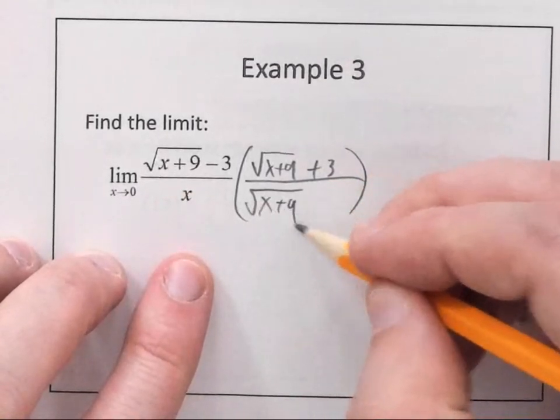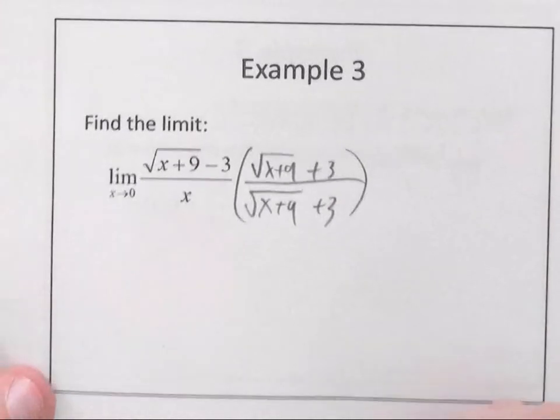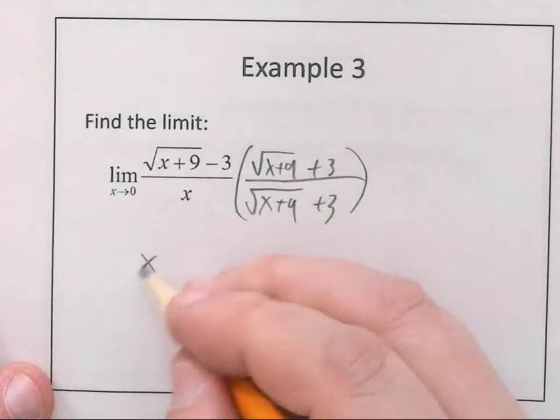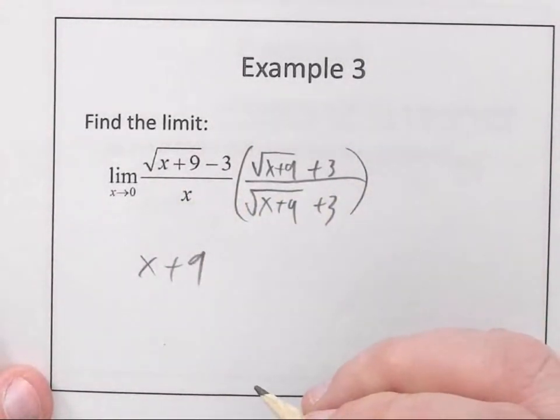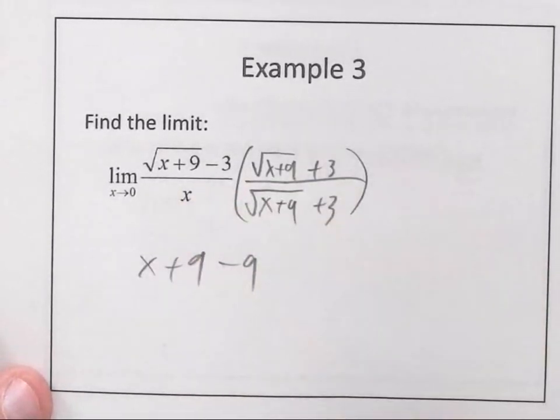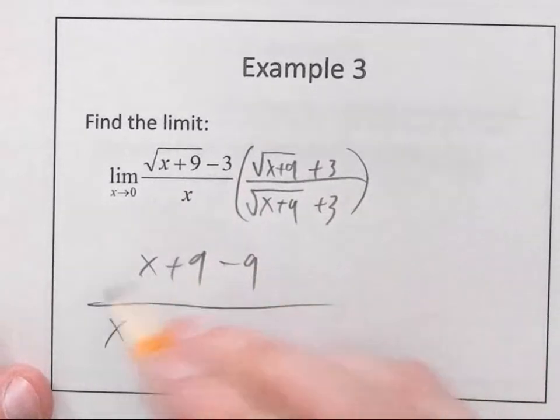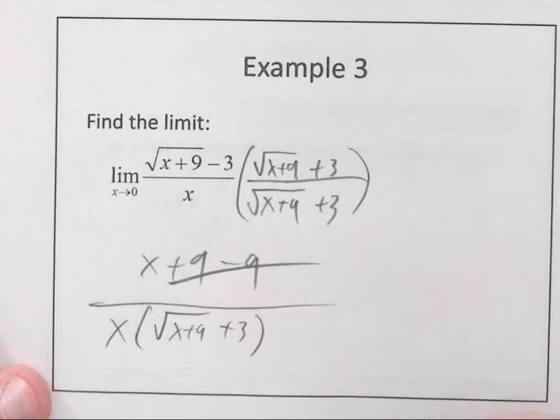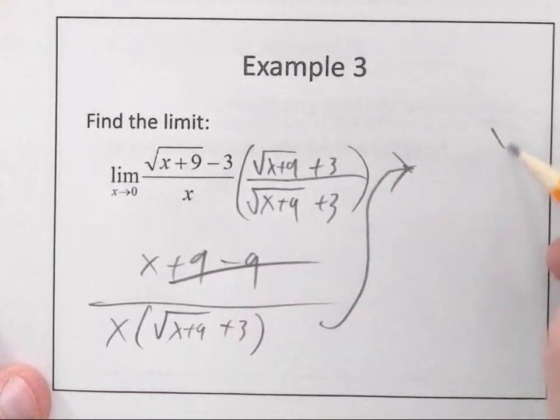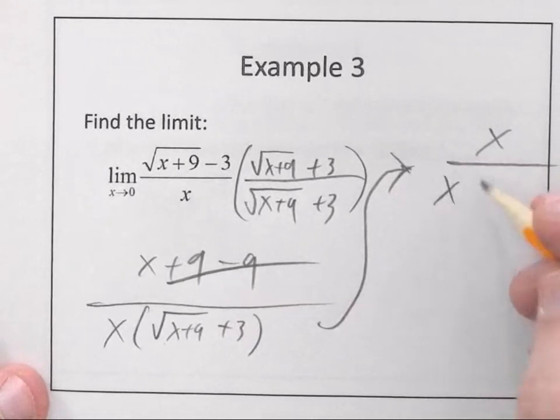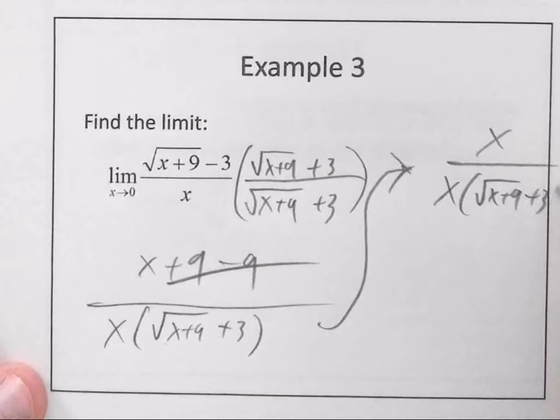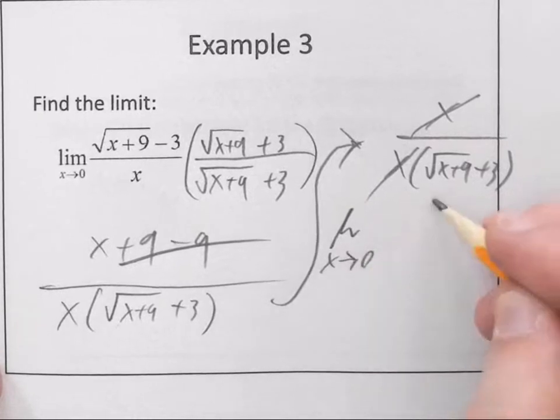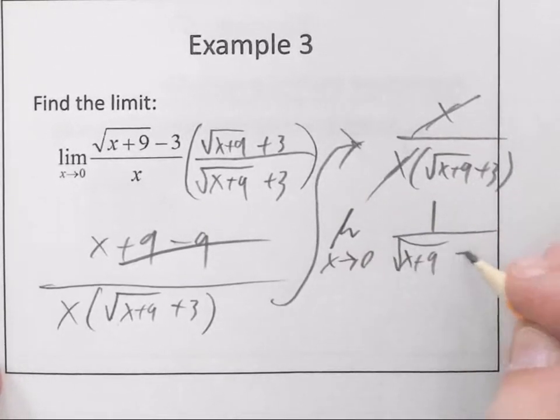Well, speak up. So, if I multiply by the conjugate of the top, what is the conjugate of the top? Square root of x plus 9 plus 3. So, multiply that top and bottom. Well, what happens to the top? Square root of x plus 9 times square root of x plus 9 is just x plus 9, minus 9. The inside and outside cancel off. The bottom, I'm actually just going to leave this, because what's going to happen to the top? It's going to become just an x.